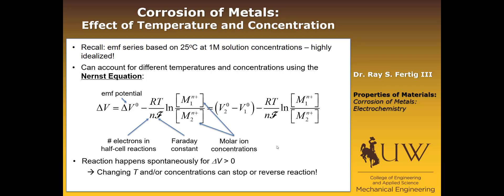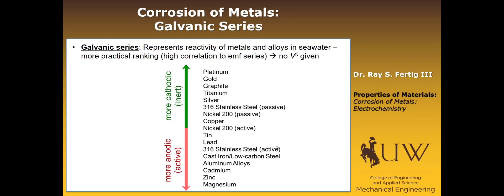One final table or calculation that I want to make you aware of is what's called the galvanic series. This is probably more practically used in engineering applications because unlike the EMF series that required us to use a standard hydrogen electrode, the galvanic series represents the reactivity of metals and alloys in seawater, which is a bit more useful for most of our design purposes. You will notice that there's a high correlation from the galvanic series to the EMF series. One other difference is that in the EMF series, we actually get a voltage V0 value for each oxidation reaction.